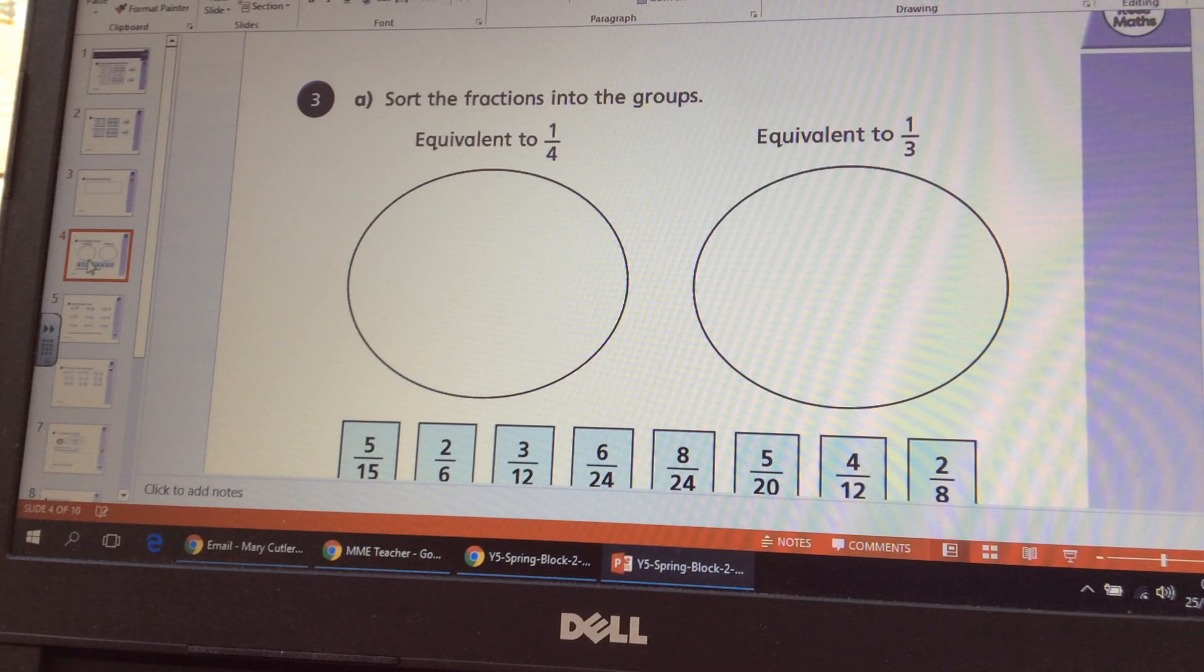Here you are sorting the fractions into the two groups, so remember if it's equivalent to a quarter, if you divide the denominator by four you would get the numerator for it to be equivalent to a quarter. And for it to be equivalent to a third, the denominator has to be three times the size of the numerator.